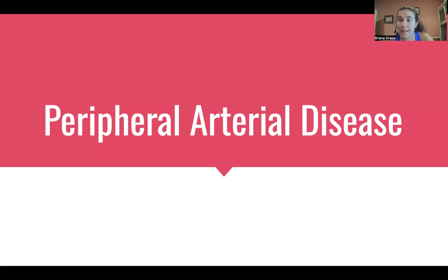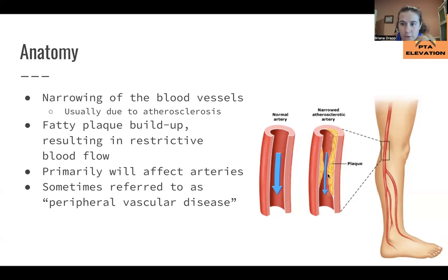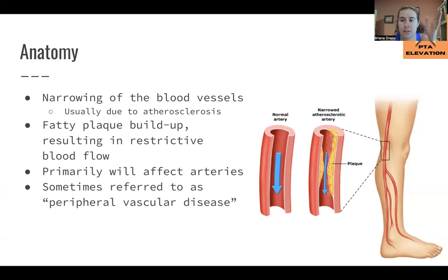Let's get into it. This condition is going to affect the arteries, and it's because of a buildup of atherosclerotic lesions — basically plaque in the artery. The plaque starts building up, and as you can see in this photo, the plaque has narrowed the artery. The more the artery narrows, the less blood flow gets through, which is why you will see necrosis at end-stage peripheral arterial disease and ulcer formation.